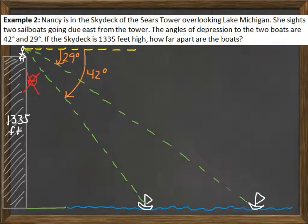Now, we can use the fact also that these are congruent to the angle of elevation from the boat to her. So the person in the last boat would see her at a 29 degree angle. And someone in the first boat would see her at a 42 degree angle. Now, we're getting somewhere. What are we looking for? We're looking for the distance between the two boats, x.